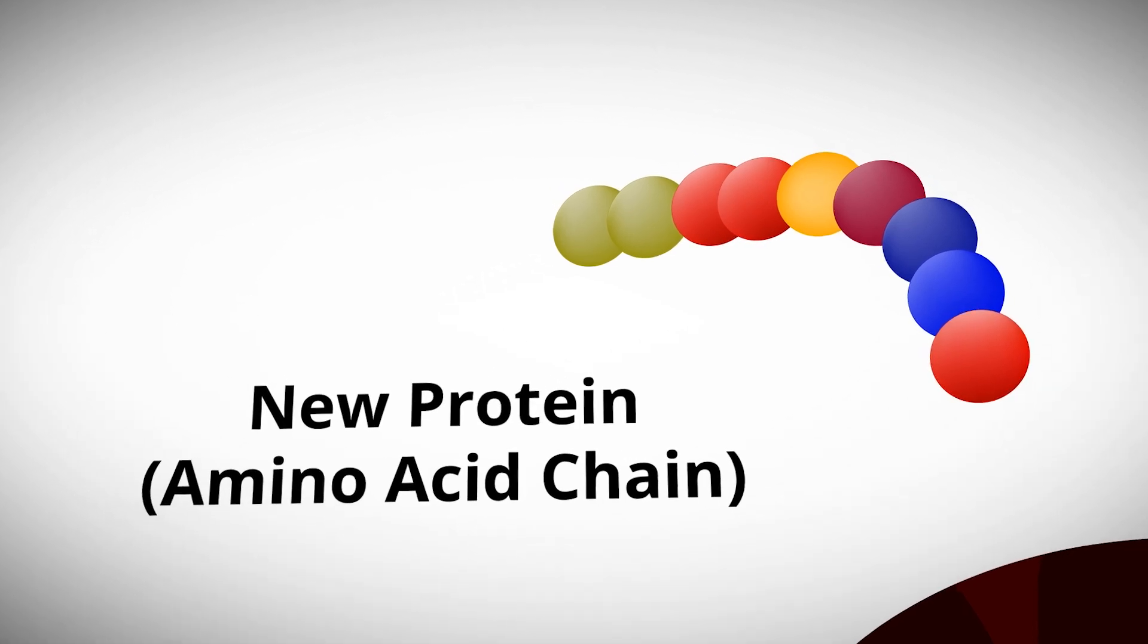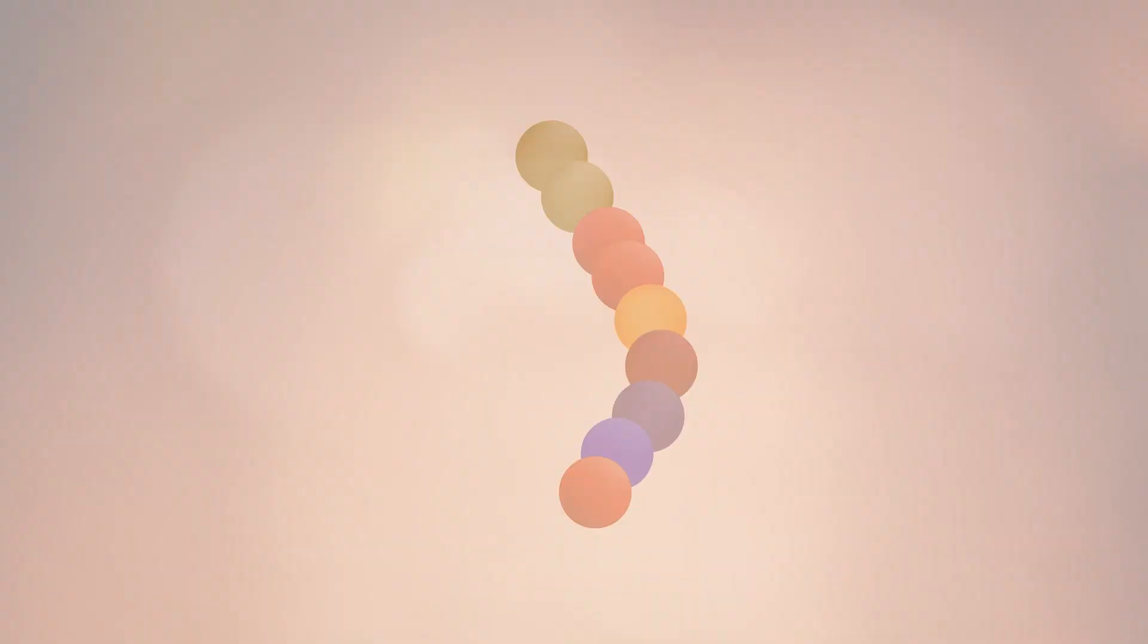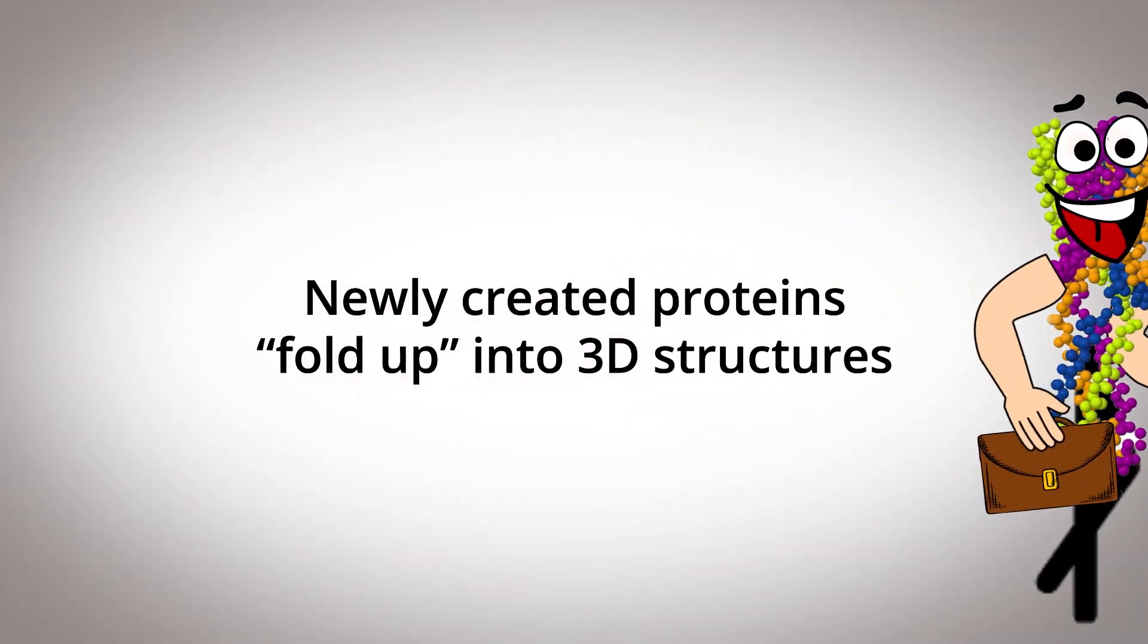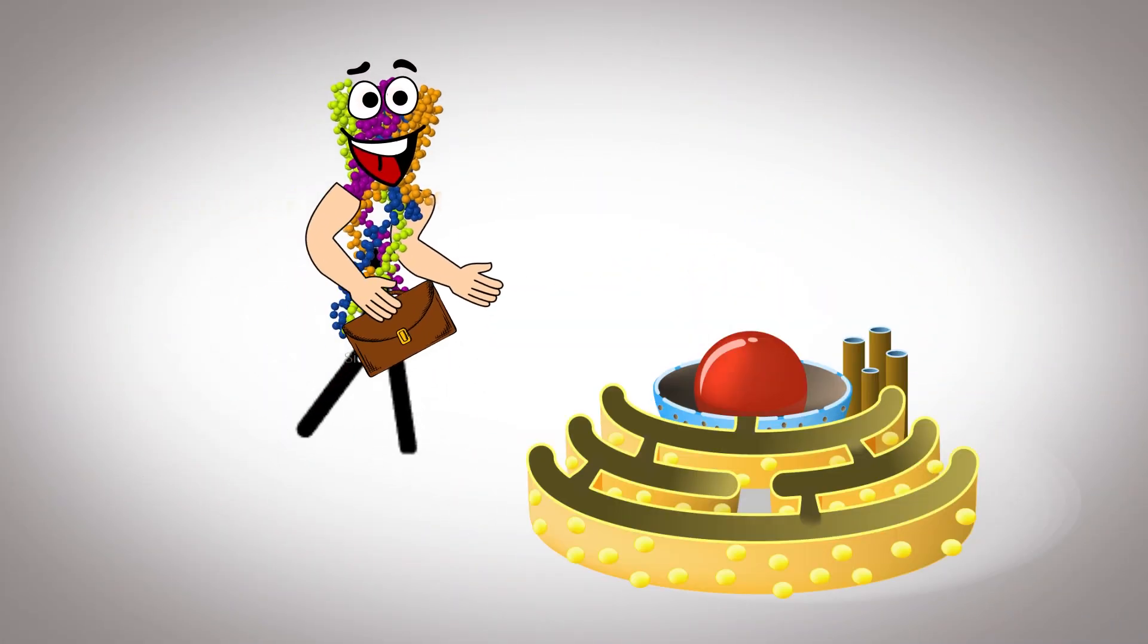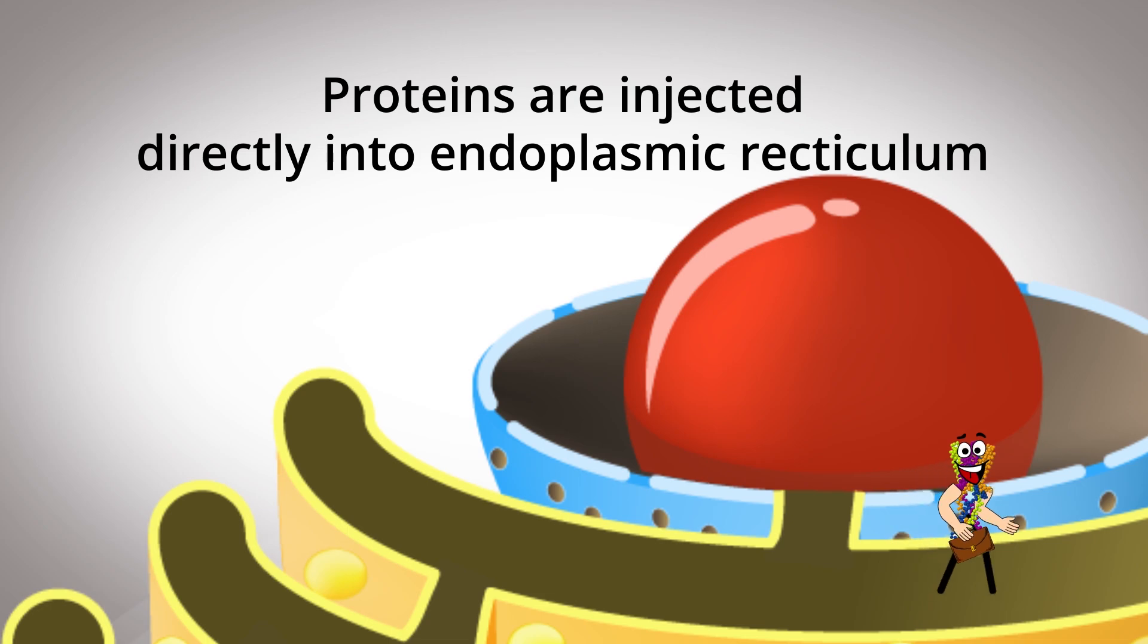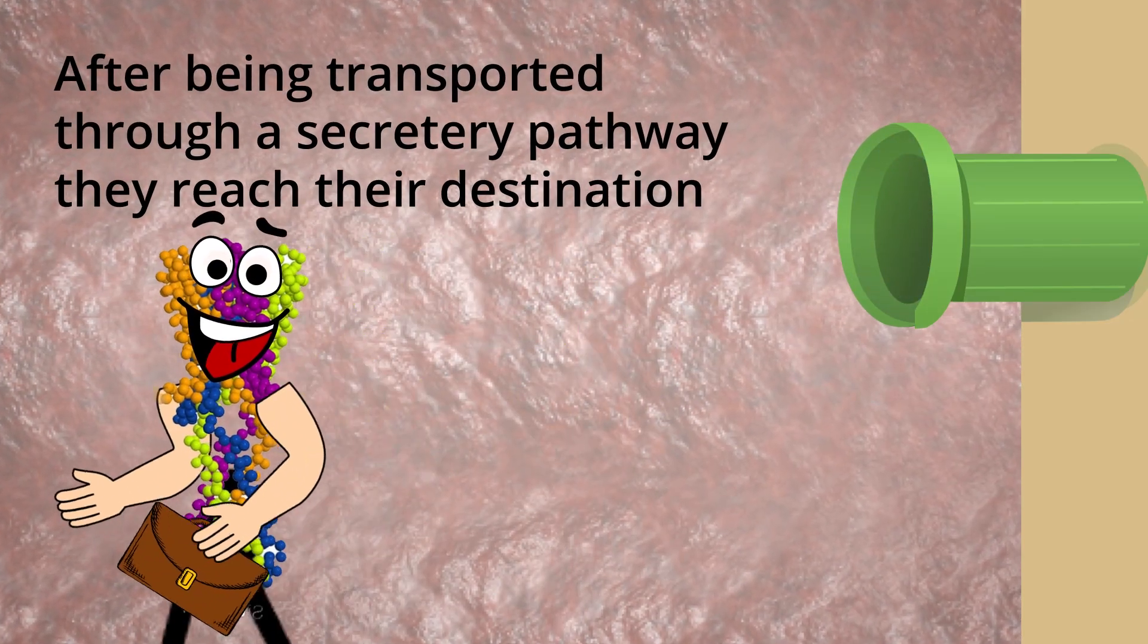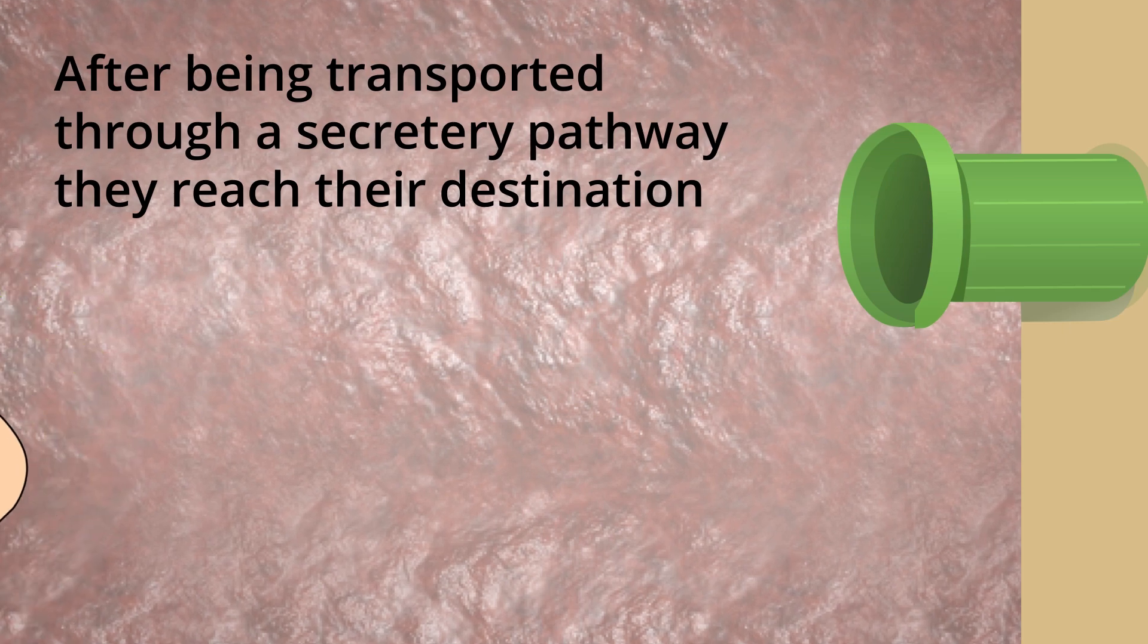This is a process known as translation. Once a protein is translated, it folds into a functional three-dimensional structure and becomes inserted directly into the endoplasmic reticulum and transported into the secretory pathway, where it will reach its destination.